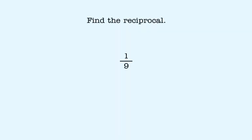To find the reciprocal of one-ninth, we switch the numerator and denominator. The reciprocal is nine over one. However, we don't leave fractions written with a denominator of one, so we should rewrite our answer as nine.